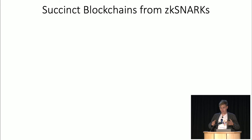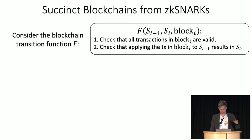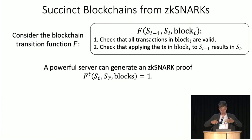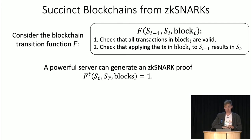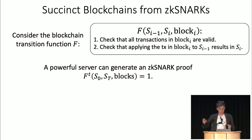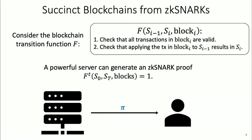There is a solution that revolves around SNARKs. Consider the blockchain transition function f — in Ethereum, f would be the EVM, checking that one transaction was applied correctly. A powerful server generates a SNARK, a succinct efficiently-verifiable proof, saying that this entire computation — hundreds of gigabytes of transaction data — was applied correctly. As a client, I only need to download this proof, which can be a few hundred bytes, check it in milliseconds, and then I'm convinced the current state is valid.